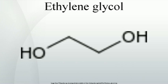Under these conditions, ethylene glycol yields of 90% can be achieved. The major byproducts are the ethylene glycol oligomers diethylene glycol, triethylene glycol, and tetraethylene glycol. About 6.7 billion kilograms are produced annually.